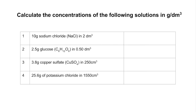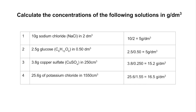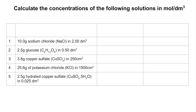The first batch is straightforward: g/dm³ using mass ÷ volume. Question 1: 10 ÷ 2 dm³ = 5 g/dm³. Question 2: 2.5 ÷ 0.5 = 5 g/dm³. Question 3: 3.8 ÷ 0.25 dm³ (converting 250 cm³) = 15.2 g/dm³. Question 4: 25.6 ÷ 1.55 dm³ = 16.5 g/dm³.